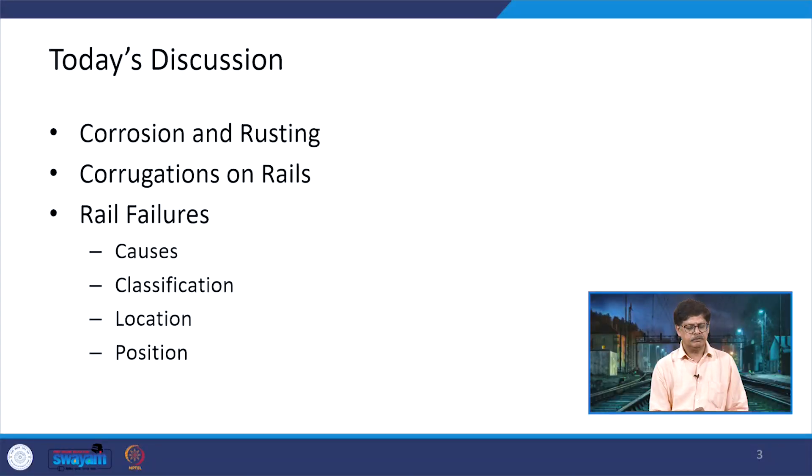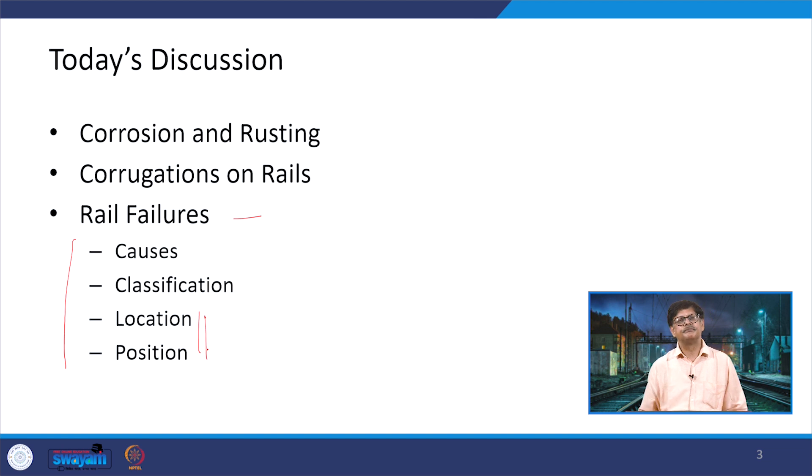Dear students and participants of the course on Railway Engineering. Today we are going to talk about aspects left in the previous lecture. We started with buckling and discussed hog rails and battered rails. The two remaining aspects are corrosion and corrugation of rails. We will also cover rail failure — including its causes, classification, location and position.